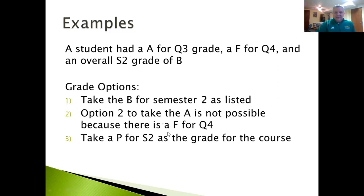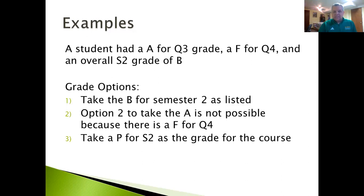A third example: a student was doing well in the third quarter, really struggled with at-home learning, and failed the fourth quarter. Those two averaged out to a B overall. In this case, the option to take the quarter three grade is not available because of the failing fourth quarter grade — to take the Q3 grade, that Q4 grade must be passing. So the two options available are either the B for the semester or the pass grade. If a student typically would have gotten an A and now has a B, taking the pass grade would not negatively impact the GPA.